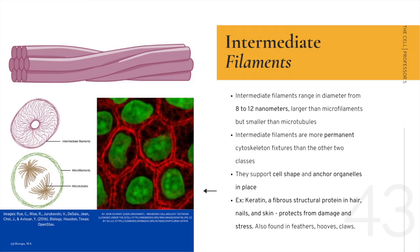The last type of cytoskeleton fiber is intermediate filaments — fibers with diameters in a middle range of 8 to 12 nanometers, larger than microfilaments but smaller than microtubules. They are more permanent cytoskeleton fixtures than the other two classes; they support cell shape and fix organelles in place within the cell. An example is keratin, a fibrous structural protein found in hair, nails, and skin that protects them from damage and stress, and also found in feathers, hooves, and claws.